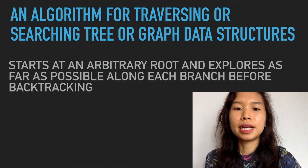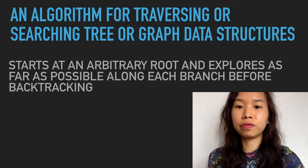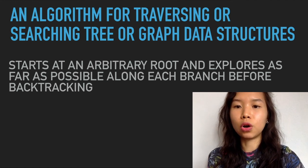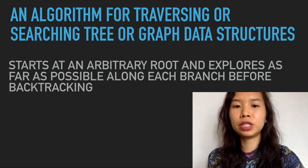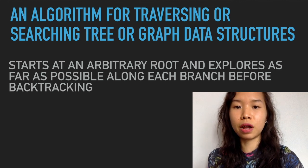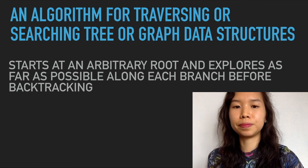To summarize, depth-first search is an algorithm for traversing or searching a tree or graph data structure. One starts at the root — selecting some arbitrary node as the root in the case of a graph — and explores as far as possible along each branch before backtracking.